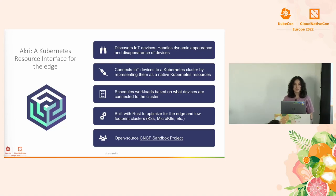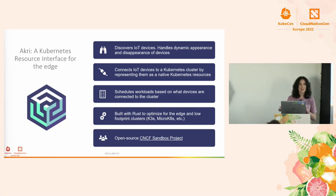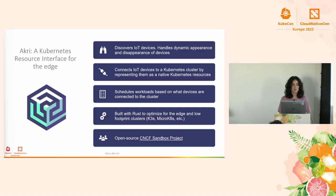Akri stands for A Kubernetes Resource Interface because it's an interface that abstracts away the details of discovering a variety of IoT devices — whatever protocol they speak — and brings them into the cluster by representing them as native Kubernetes resources. Once Akri has discovered those resources, it can automatically deploy your workloads to use those devices. It was built in Rust because we are really focused on small edge scenarios. And as an aside, Akri also means edge in Greek.